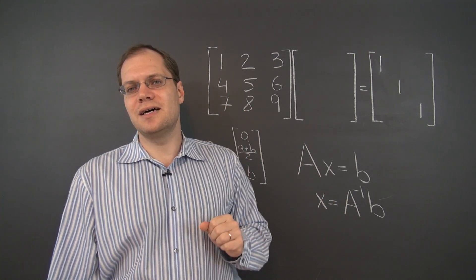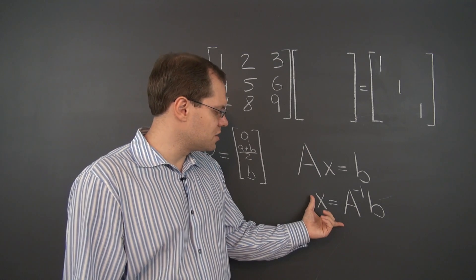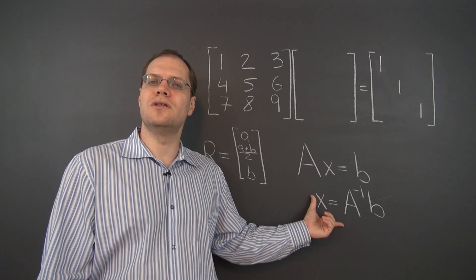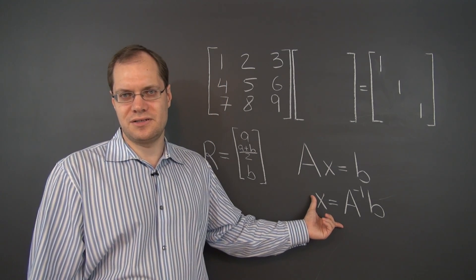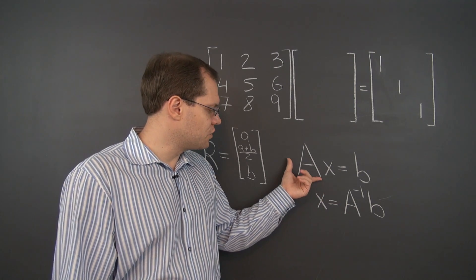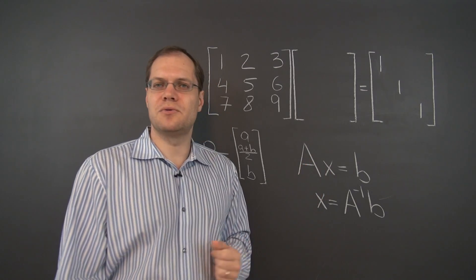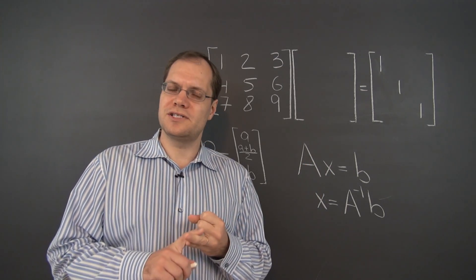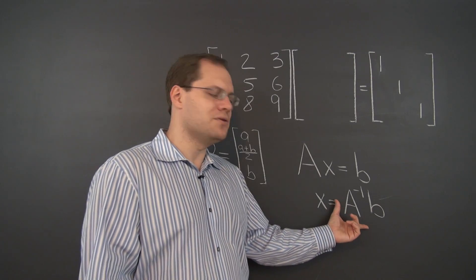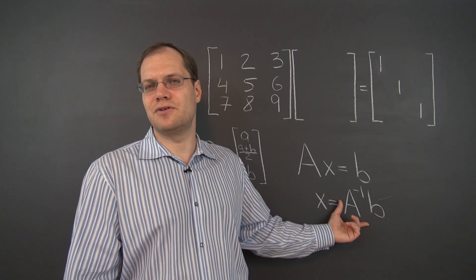So this matrix simply doesn't have an inverse. And this trick is reserved only for invertible matrices. And when you have an invertible square matrix, the system AX equals B always has a solution and always has a unique solution. And that unique solution is A inverse B.